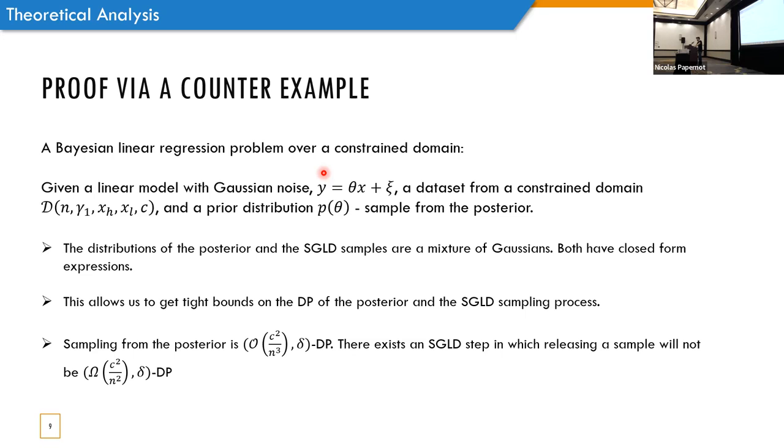So, why did we choose this problem? Aside from the fact that it gave us the behavior that we want to show, for this specific problem, both the posterior and the SGLD samples are the distribution of both of them is a mixture of Gaussian with closed-form expressions. By having closed-form expressions, we could directly analyze the distribution, and in that way, to get tight bounds over the differential privacy.